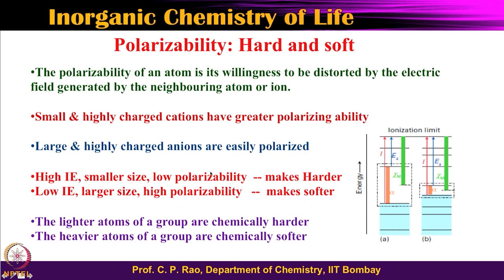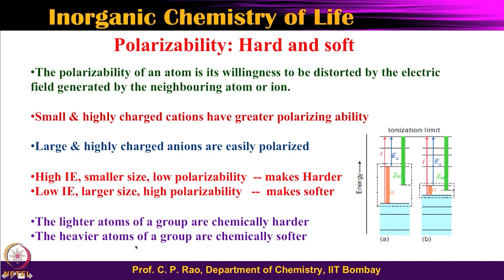Both Lewis acids can be hard or soft, and Lewis bases can similarly be hard or soft. The metal is the Lewis acid and the ligand is the Lewis base. Hard acids combine strongly with hard bases, and soft acids combine strongly with soft bases. In the periodic table, lighter elements of a group are chemically harder, while heavier elements further down the group are softer.